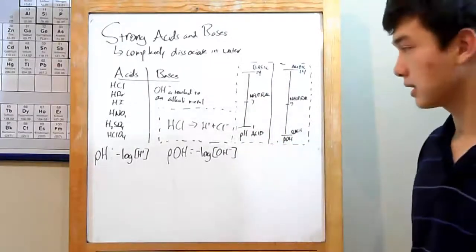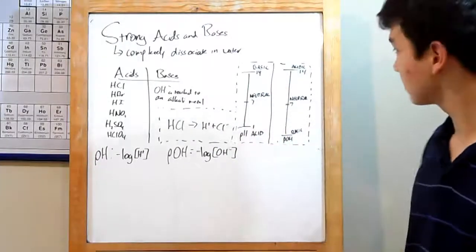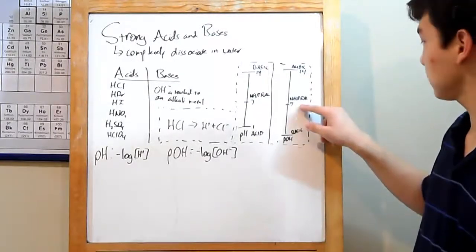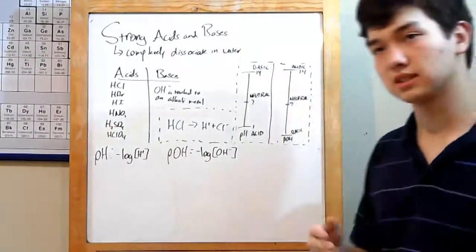What you might not have heard of, however, is the pOH scale. That's just the pH scale flipped over. At 1, you've got your most basic substance, 7 is neutral, and 14 is your most acidic.